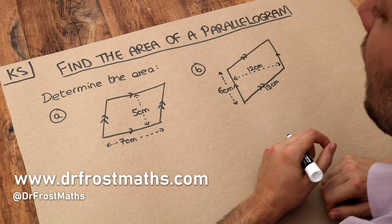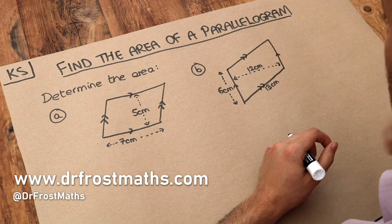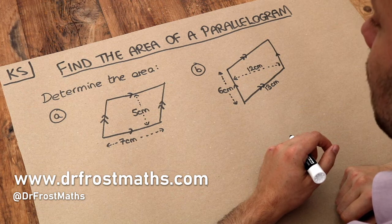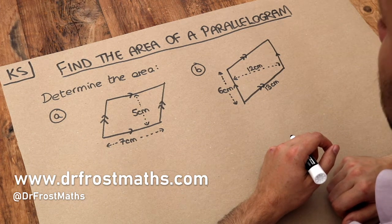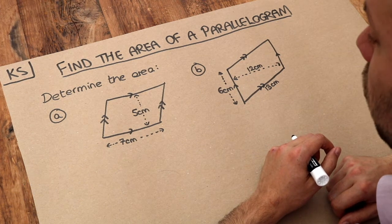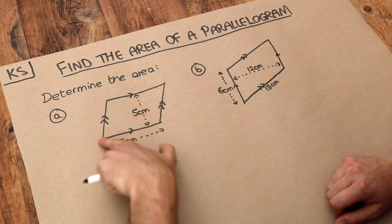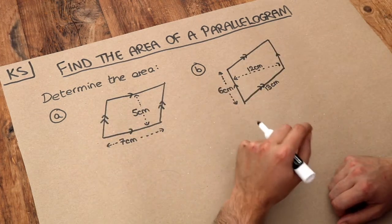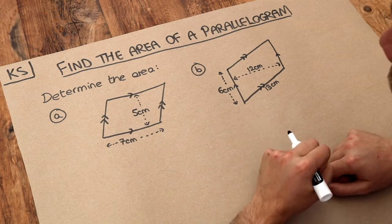Hello and welcome to Dr. Ross Math's key skill video on finding the area of a parallelogram. Now just to remind you what a parallelogram is, it's when you have a quadrilateral. A quadrilateral has four sides, like these two examples here, where you have two pairs of parallel sides.